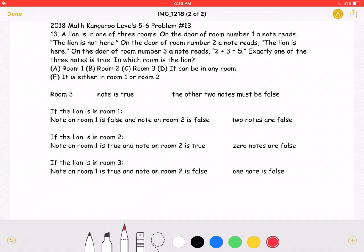Let's start with room 3. The note on room 3 says 2 plus 3 equals 5, which is true. So the note on room 3 is true.